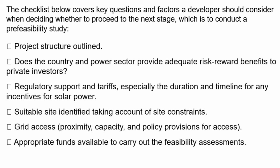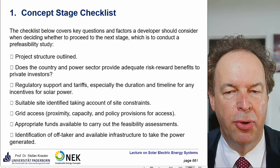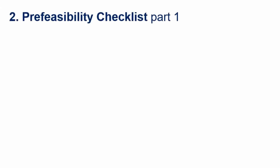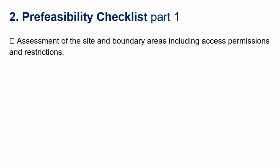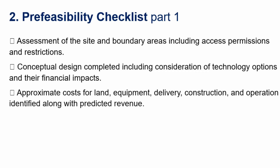Appropriate funds must be available to carry out the feasibility assessments — someone has to pay for it, because you spend several weeks or months on that. Identification of the off-taker and available infrastructure to take the power generated — usually called a power purchase agreement. For the pre-feasibility checklist: assessments of the site and boundary areas, including access permissions and restrictions. Conceptual design completed considering technology options and their financial impacts — for example, for some sites you can't have big reflections because there's an airport, or you may need a tracking system. Appropriate cost of land, equipment, delivery, construction, and operation, identified along with the predicted revenue.